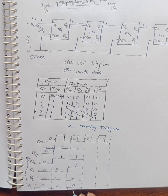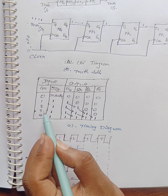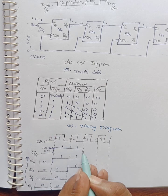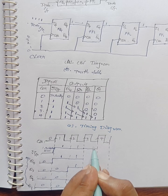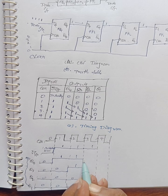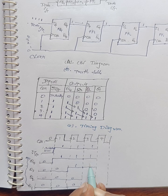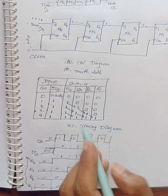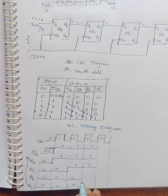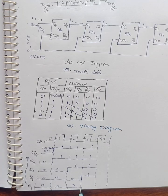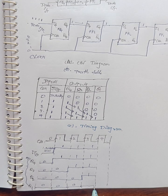Whenever the third clock pulse is applied, D input is again one. Q4 value is one, Q3 value is one, and Q2 also becomes one. Q1 remains zero.